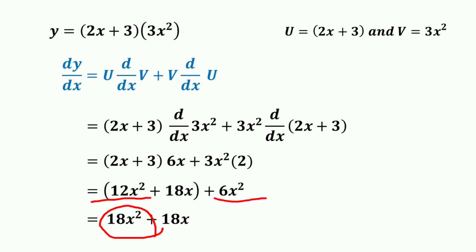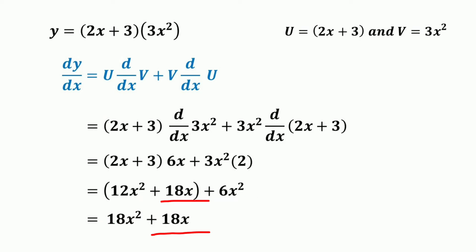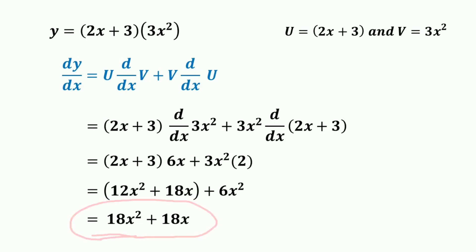So 12x squared plus 6x squared equals 18x squared, plus 18x. The derivative of the given function using the product rule is 18x squared plus 18x.